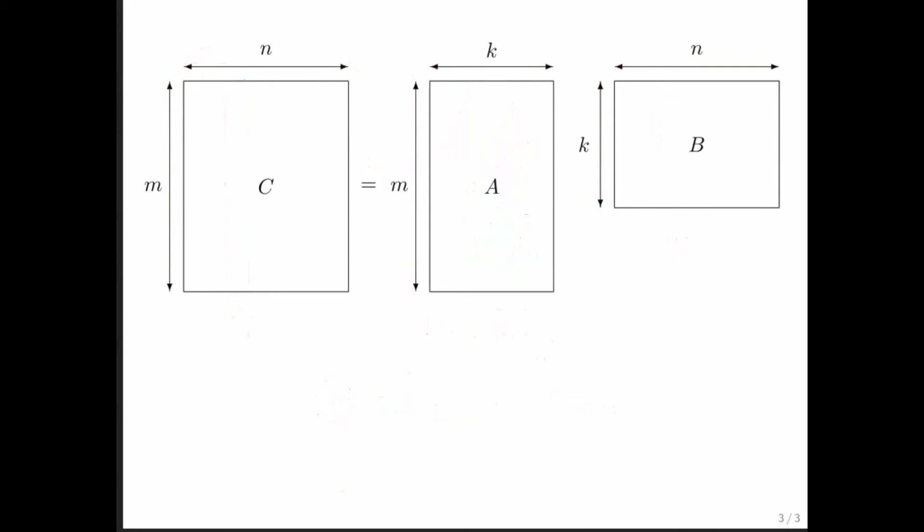Let's compute it another way. What did we just learn about how to compute a typical entry in C? Let's call it gamma sub i, j. We know that has to be computed as the inner product or dot product of the corresponding row of A with the corresponding column of B. So this would be the j-th column of B, and this would be the i-th row of A. It's computed as A sub i tilde transpose B sub j.